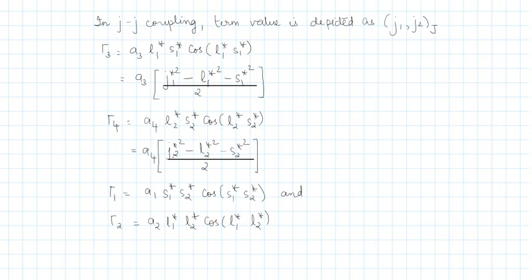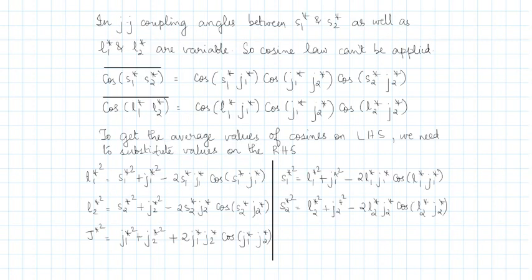For gamma1 and gamma2, the relations are available but you cannot apply the cosine law directly, because the angles involved are not fixed — they are variable. So all we can do is express an average value of the cosines of these angles, expressed in terms of products of cosines of fixed angles.